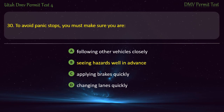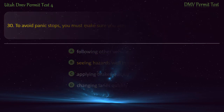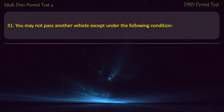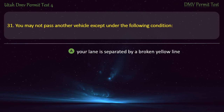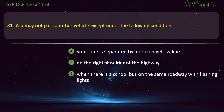Question 31. You may not pass another vehicle except under the following condition: Your lane is separated by a broken yellow line; On the right shoulder of the highway; When there is a school bus on the same roadway with flashing lights; or When within 100 feet of a railroad crossing? Answer: Your lane is separated by a broken yellow line.